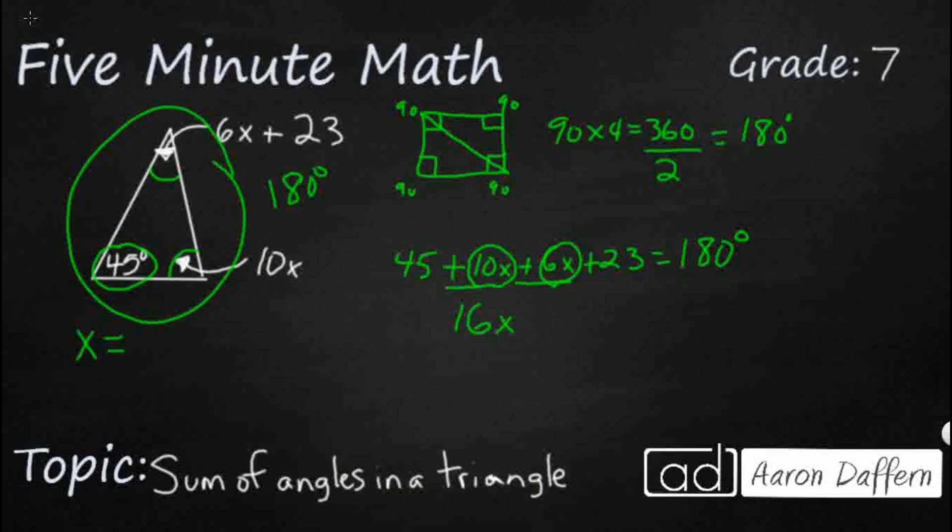They're both positive, so I'm just going to leave it as 16x. We don't need to put a plus there because that's implied. Then I have some constants. I've got 45 and 23, and they're not really attached to anything. They're not coefficients.